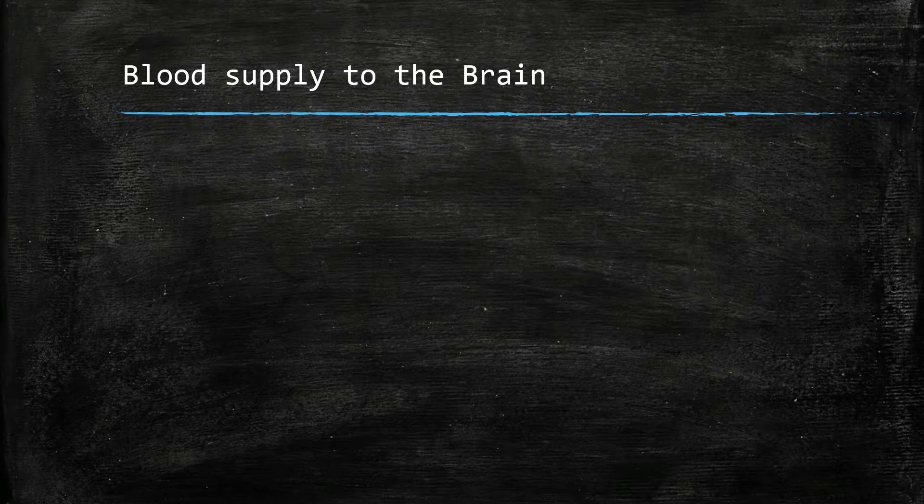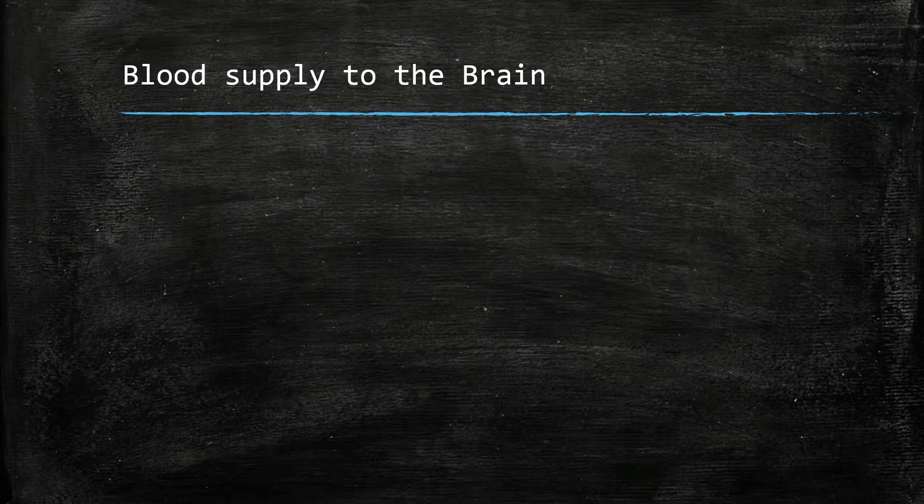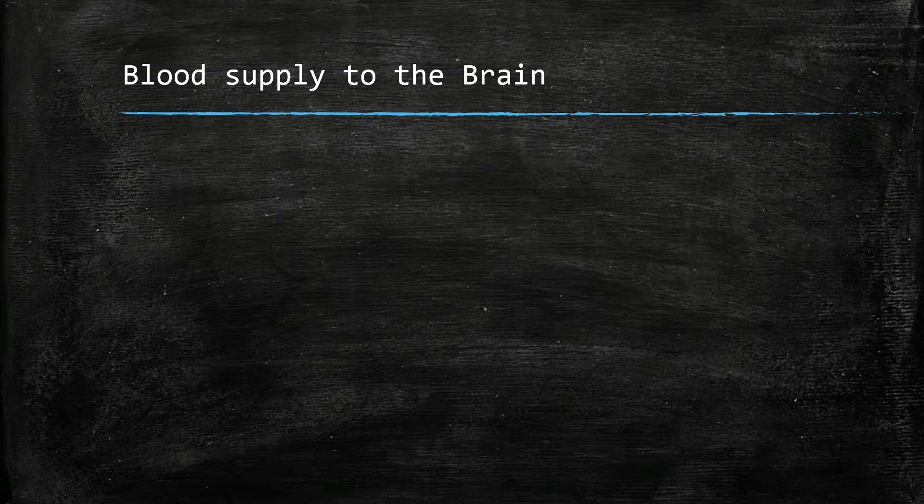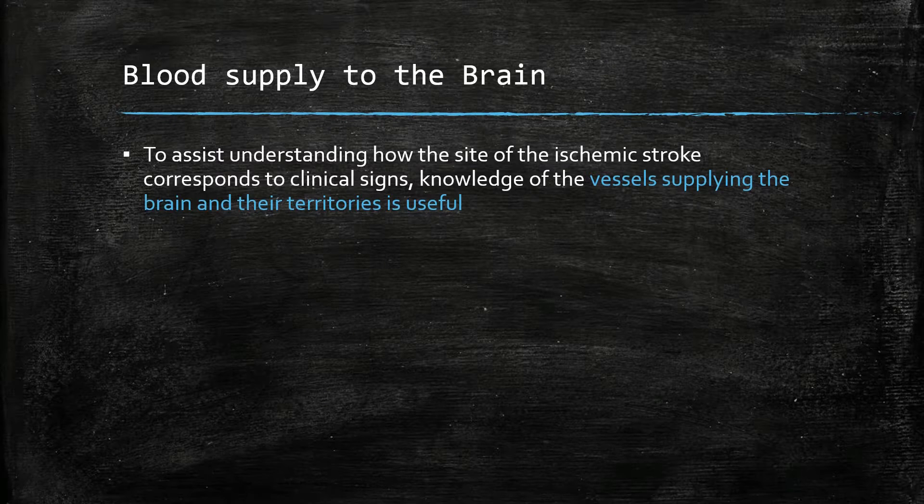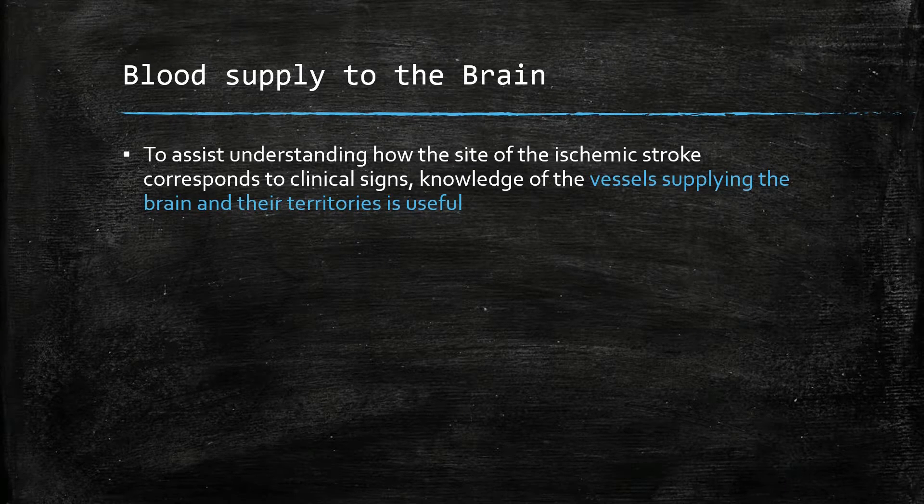To assist understanding how the position of an ischemic stroke manifests clinically, knowledge of the vessels supplying the brain and their territories is useful to know.